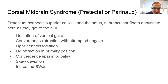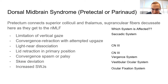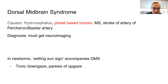Dorsal midbrain syndrome: multiple systems are affected as they pass through this region. Rule out a pineal-based tumor if you're seeing dorsal midbrain syndrome, but it can also be more common things like stroke or MS. In newborns it has a different presentation — the setting sun sign — with eyes stuck in downgaze.